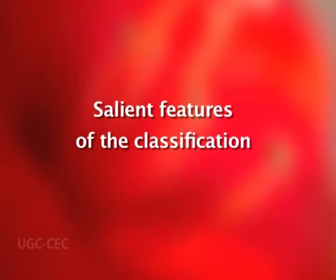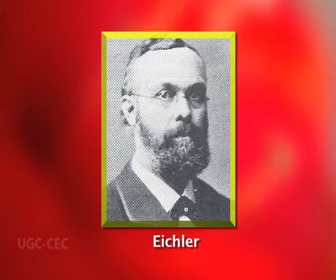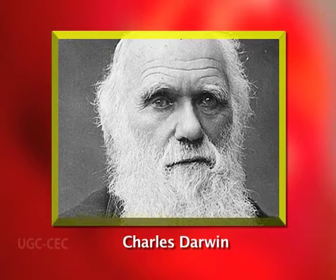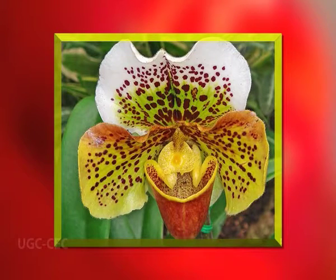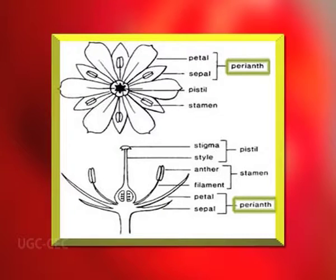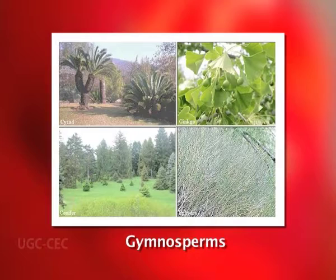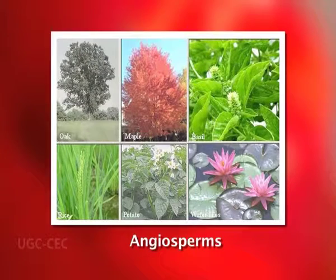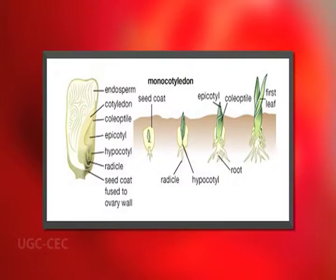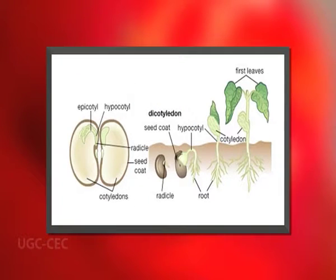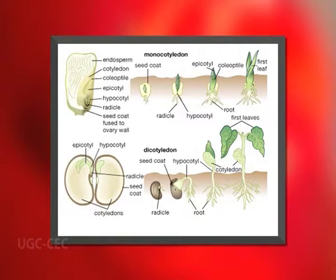The salient features of this classification: This system is based on Eichler's system, who was the first person to propose an evolutionary system of classification. It is an evolutionary system proposed subsequent to the acceptance of Darwin's theory of evolution. It is based on the assumption that flowering plants with perianth absent are evolutionarily primitive. The gymnosperms are considered to be more primitive and hence were placed before angiosperms. The monocotyledons precede the dicotyledons — an idea which gets little support from recent fossil data.